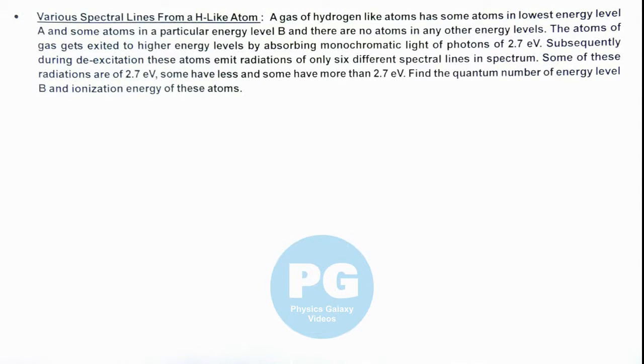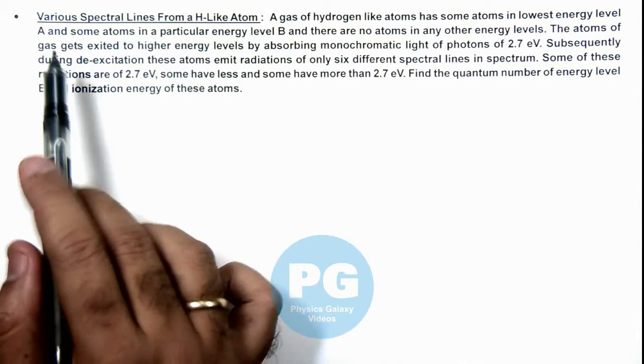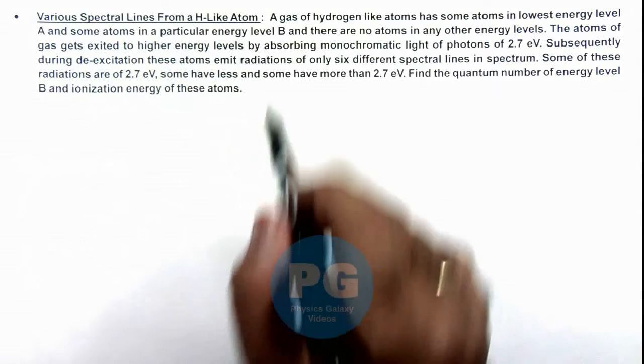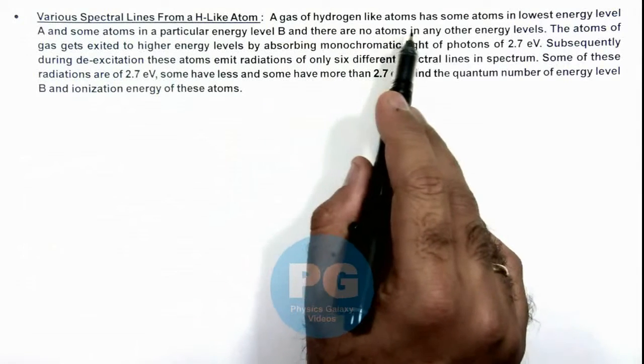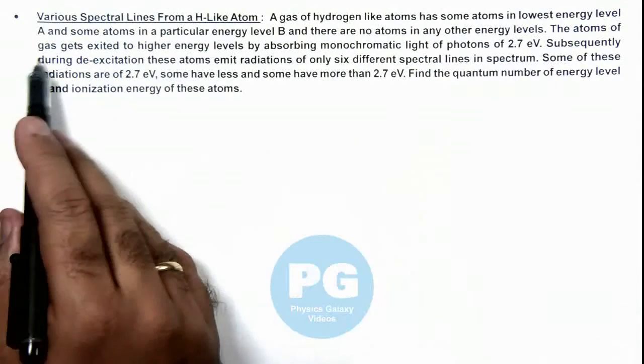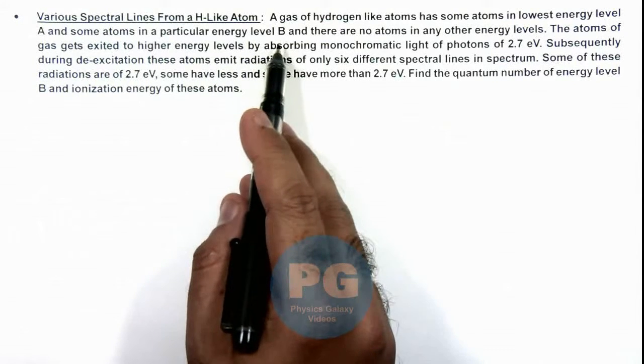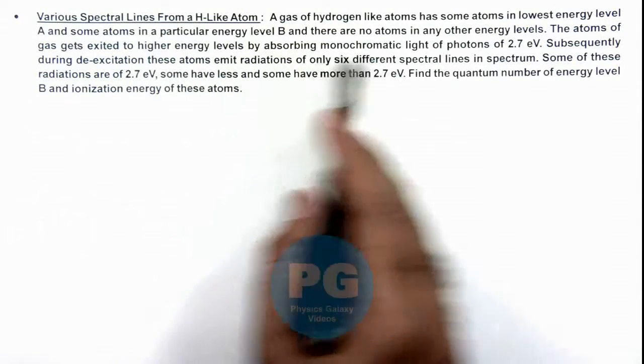In this illustration we'll discuss various spectral lines from a hydrogen-like atom. Here we are given that a gas of hydrogen-like atoms has some atoms in lowest energy level A and some in the particular upper energy level B, and there are no atoms in any other energy levels.